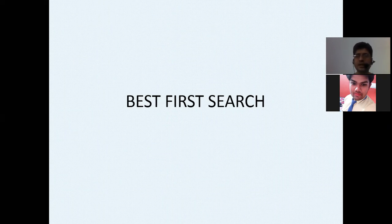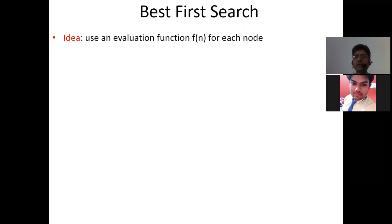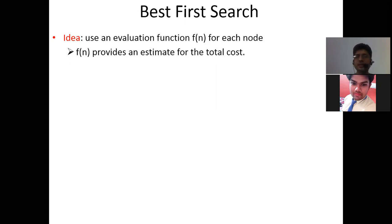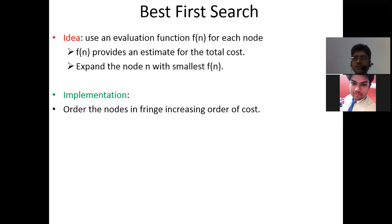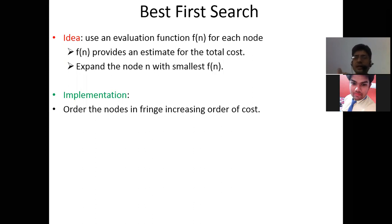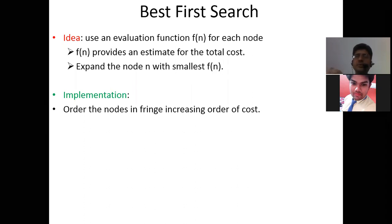First, we discuss best-first search in informed search. The idea is to use an evaluation function f(n) for each node — this is the heuristic function, providing an estimate for the total cost. We expand the node with the smallest f(n). To implement best-first search, we order nodes in the fringe in increasing order of cost, essentially replacing BFS's queue with a priority queue.